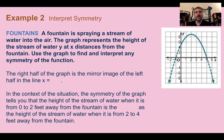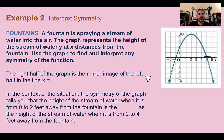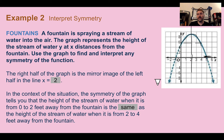Example 2: Interpret symmetry. Our real-world context is fountains. A fountain is spraying a stream of water into the air. The graph represents the height of the stream of water, y, at x distances from the fountain. Use the graph to find and interpret any symmetry of the function. Notice they have some dashed parts and some solid parts — the dashed parts wouldn't actually exist in real life, since the fountain won't spray backward or go below ground. Looking at the graph, it is symmetrical over the line x equals 2. In context, the symmetry tells you that the height of the stream of water from 0 to 2 feet away is the same as the height from 2 to 4 feet away. Symmetry can help us know how high things are and how long it took things to get there.